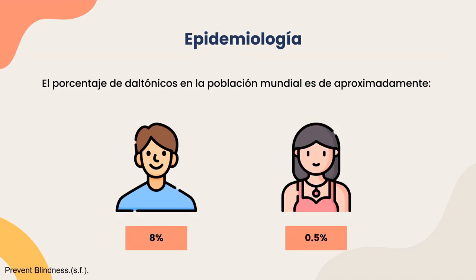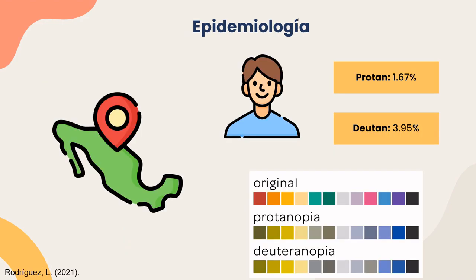Comenzando con la epidemiología general del daltonismo, el porcentaje de daltónicos en la población mundial es de aproximadamente el 8% en los hombres y el 0.5% en mujeres. Mientras que en México se estima que la prevalencia en hombres es de 5.65%, siendo 3.95% deutanes y el 1.67% protanes.